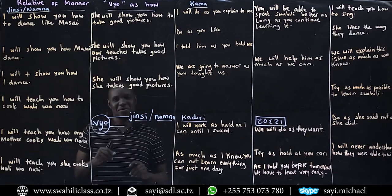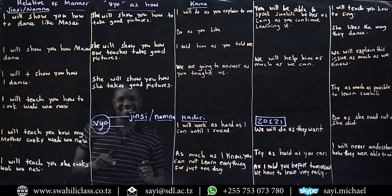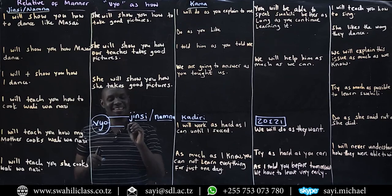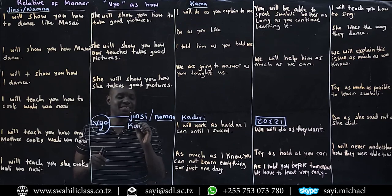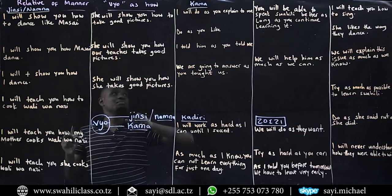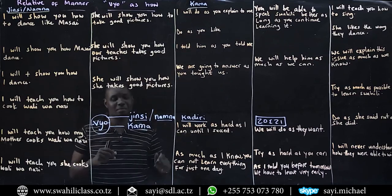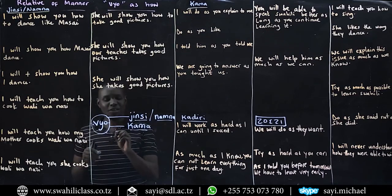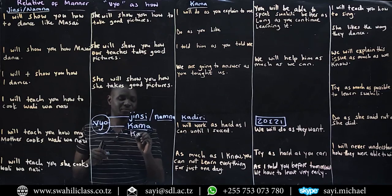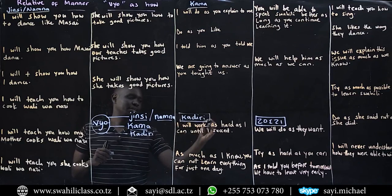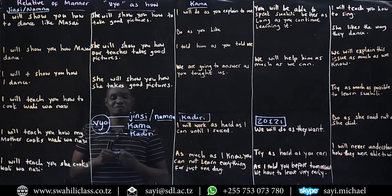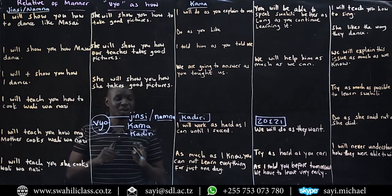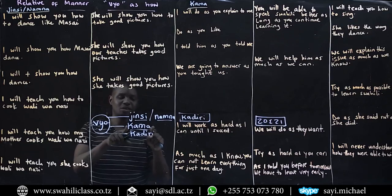Rafiki namba mbili wa vio is kama. Kama is the second friend. Rafiki namba tatu ni kadiri — that is the third friend of vio. We are going to discuss the meaning of kama. Kama is as.